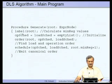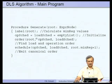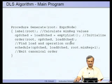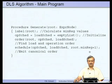Procedure generate: label the root using the minreg computation, initialize queues opsched and loadsched to empty lists. Call procedure order on the root with opsched and loadsched to find the load and operation order. Finally, call schedule using opsched, loadsched, and root.minreg + 1 total registers. This emits the actual code.